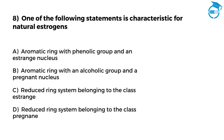One of the following statements is characteristic for natural estrogens. Option A, Aromatic ring with phenolic group and an estrane nucleus. Option B, Aromatic ring with an alcoholic group and a pregnane nucleus. Option C, Reduced ring system belonging to the class estrane. Option D, Reduced ring system belonging to the class pregnane. Your time starts now — only 7 seconds left, post your answer in the comments.